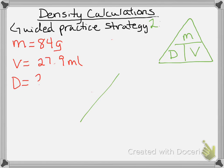And so now we are going to simply plug in the numbers to our density triangle. So I'm looking for D, I have my mass, here's my volume, and so it says to divide.